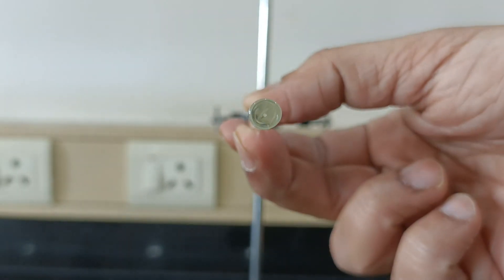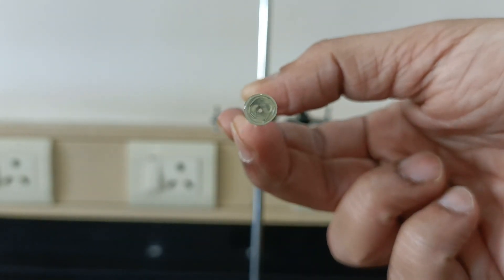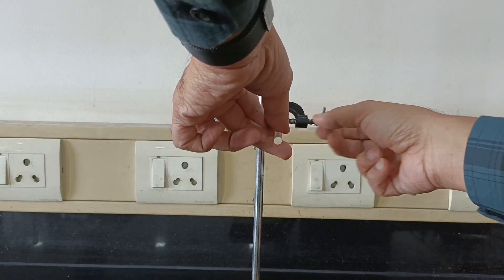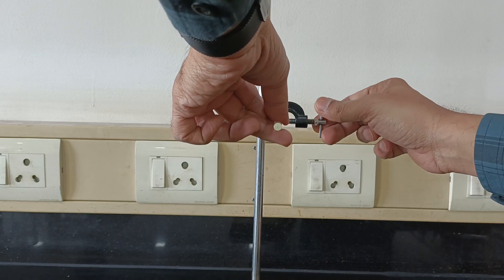This is the capillary tube with extremely narrow diameter whose radius we wish to find. Let's attach the capillary in the stand as shown.